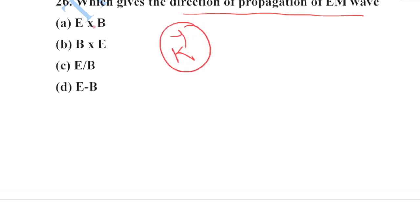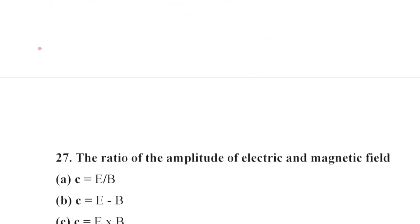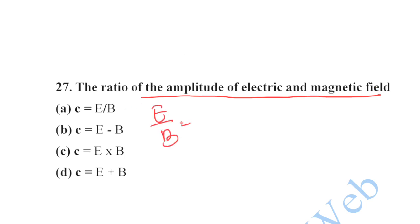Next: which gives the direction of propagation of an electromagnetic wave? The wave vector k gives the direction of propagation, and E cross B also gives the direction of propagation. Option A is your correct option. The ratio of amplitude of electric to magnetic field, E/B, equals c, the speed of light. Option A is your correct option.